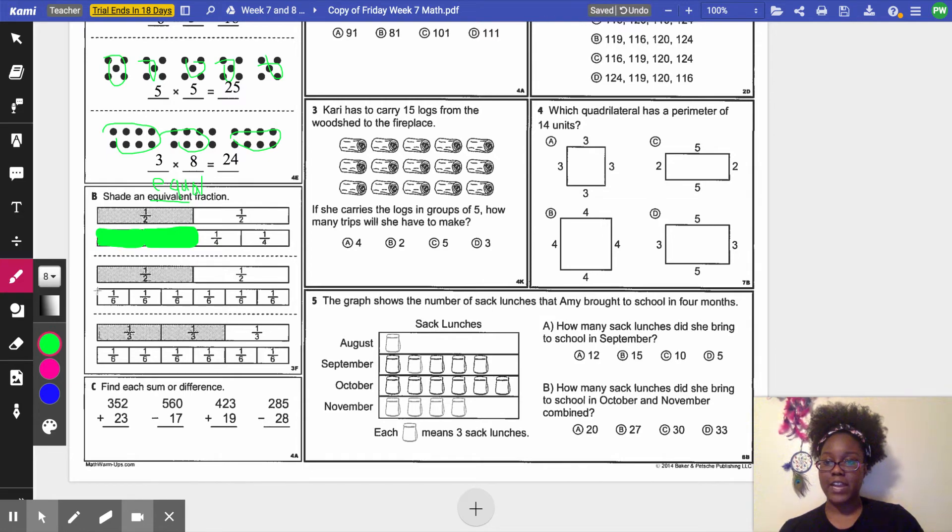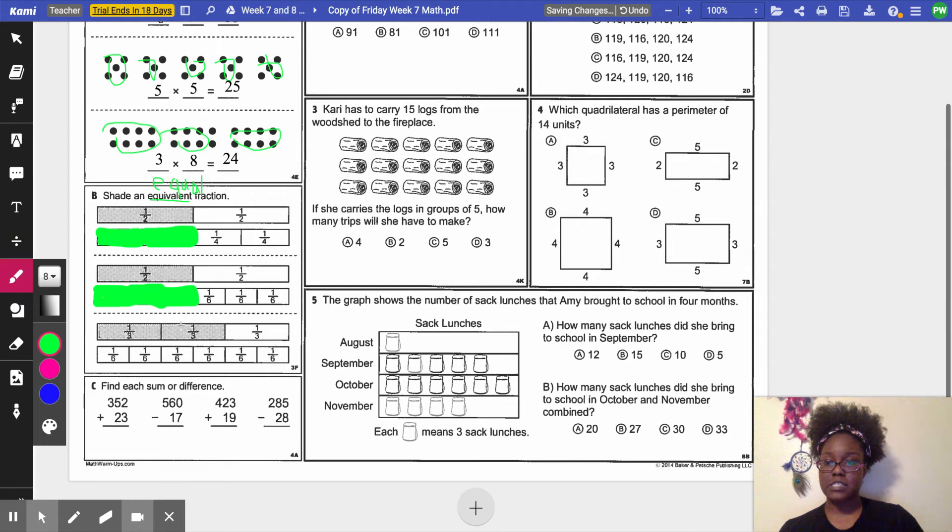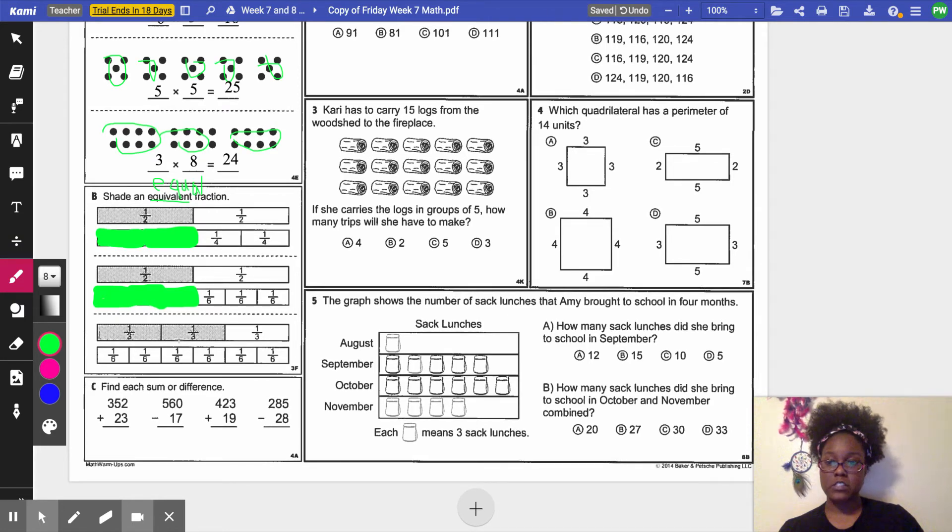On this next one, I have 1 half. I'm trying to find out how many sixths. 1 sixth isn't enough. 2 sixths isn't enough. So I shade one more, and I get 3 sixths. So 1 half is equivalent to 3 sixths. On the last one, I have 2 thirds. 2 thirds is equivalent to not 1 sixths, not 2 sixths, not 3 sixths, but 4 sixths. So 2 thirds is the same as 4 sixths.